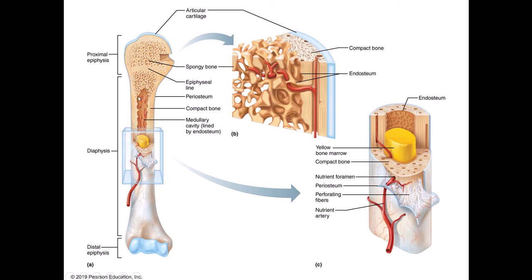In the middle of the diaphysis is an open space called the medullary cavity, which fills with yellow marrow as we age. You'll also see blood vessels running throughout the spongy bone, as well as perforating arteries that go into and through the different spaces in the bone.